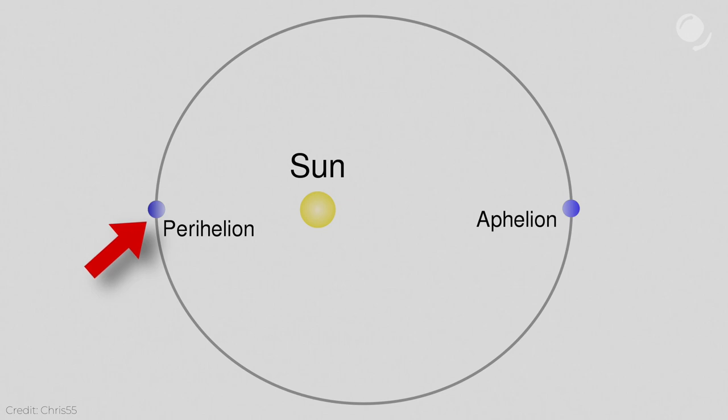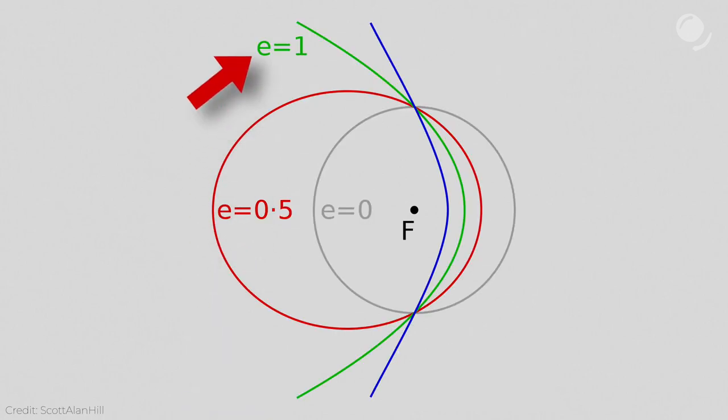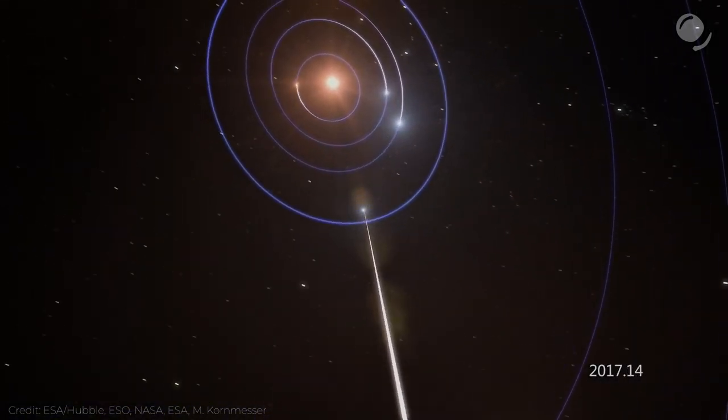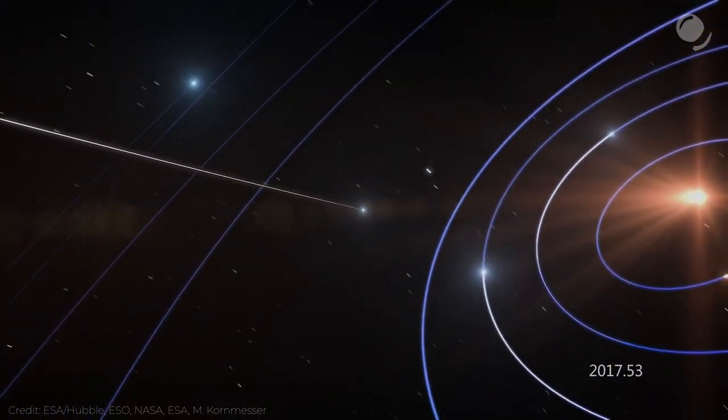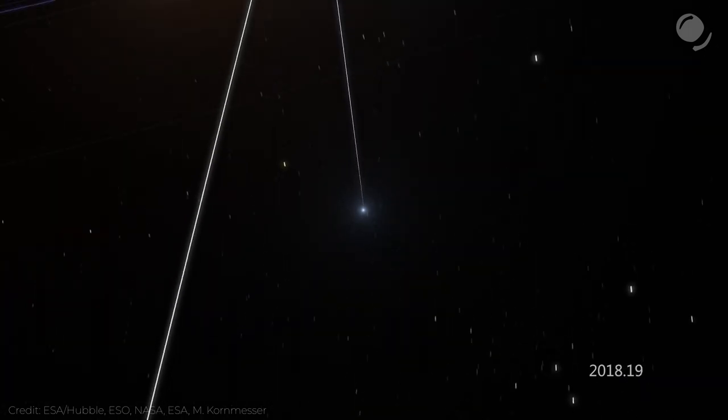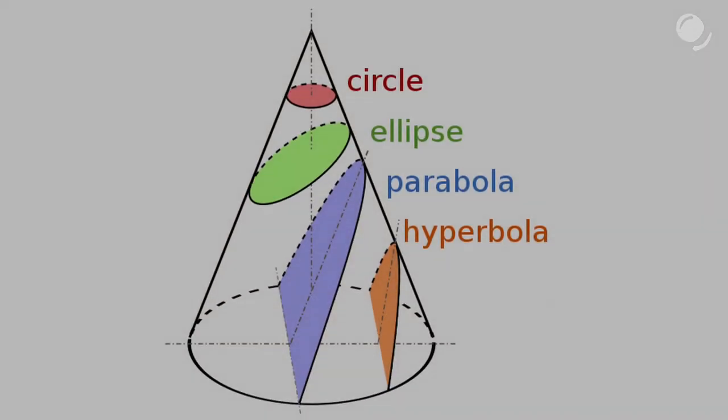Also today we would need pericenter and apocenter. Pericenter is the closest point of an elliptical orbit to a central body, whereas apocenter is the farthest one. Though you probably hear more frequently words like perihelion, the closest point to the sun, or aphelion. If eccentricity equals 1 the orbit is a parabola. But if it is more than 1 it is a hyperbola. Objects on hyperbolic orbits are not bound to the bodies and they can escape them.